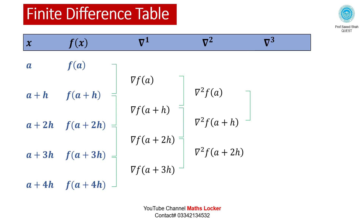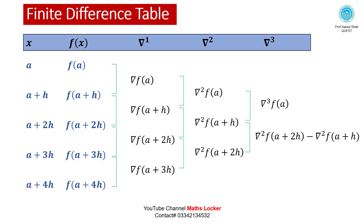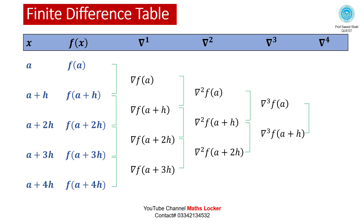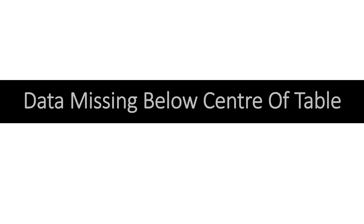Taking the third differences: del³ f(a) equals del² f(a+h) minus del² f(a), and del³ f(a+h) equals del² f(a+2h) minus del² f(a+h). Taking the fourth difference: del⁴ f(a) equals del³ f(a+h) minus del³ f(a). Note that data is missing below the center of the table.